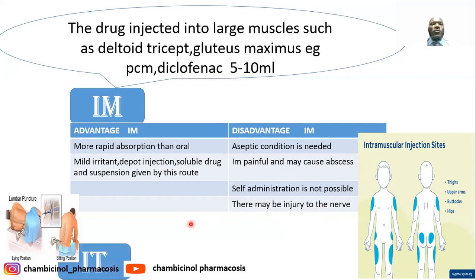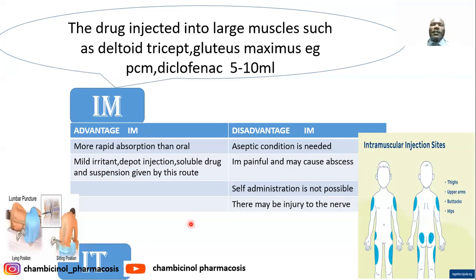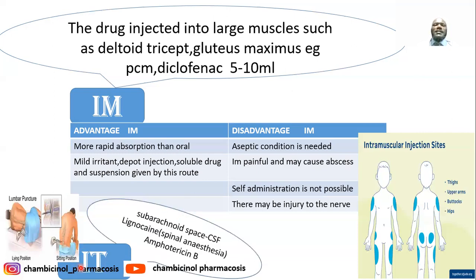We also have the intrathecal route of drug administration — administration directly into the subarachnoid space and cerebrospinal fluid. This is very important especially for treatment of meningitis infection, for example caused by Cryptococcus neoformans. Amphotericin B can be administered via the intrathecal route, and lignocaine for spinal anesthesia via lumbar puncture.